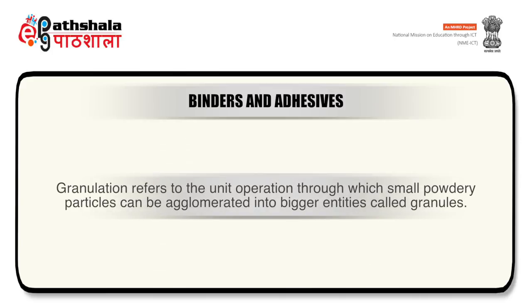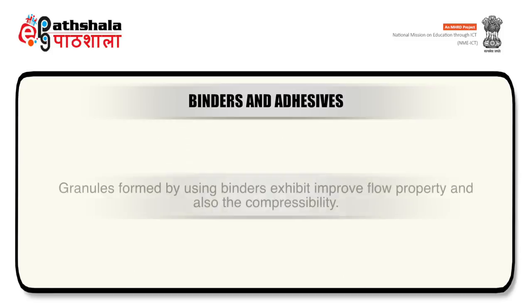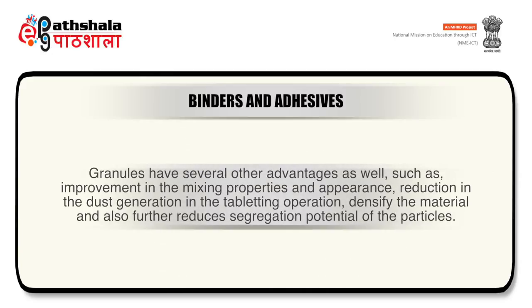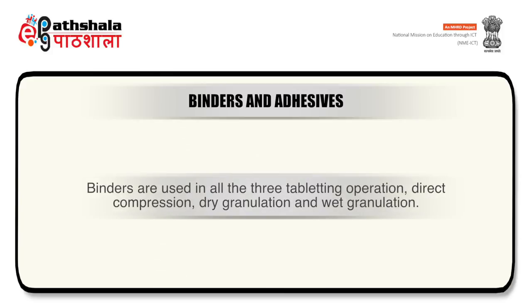Granulation refers to the unit operation through which small powdery particles can be agglomerated into bigger entities called granules. Granules formed by using binders exhibit improved flow property and also compressibility. Granules have several other advantages such as improvement in mixing properties and appearance, reduction in dust generation in the tableting operation, densification of material, and reduction in segregation potential of particles. Binders are used in all three tableting operations: direct compression, dry granulation, and wet granulation.